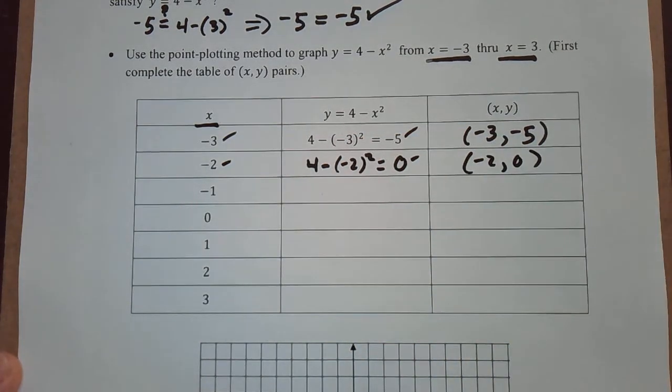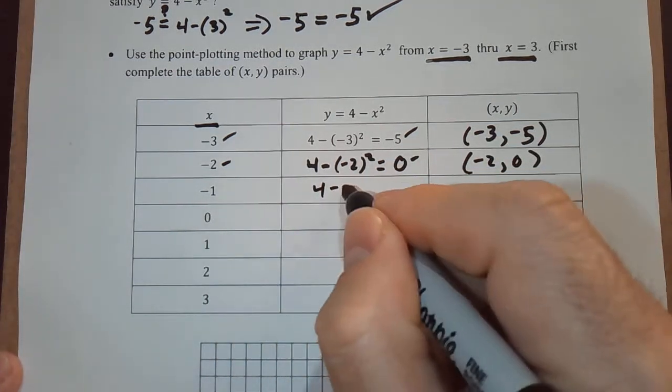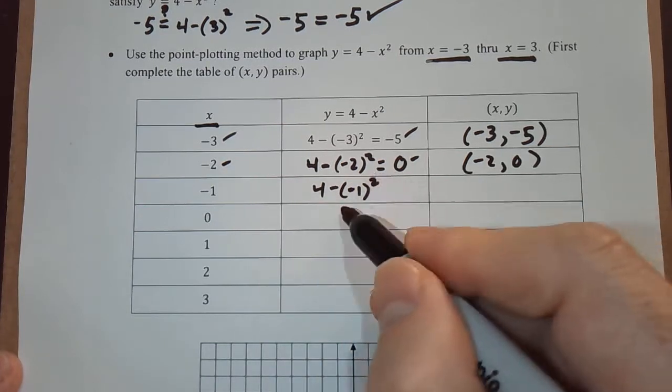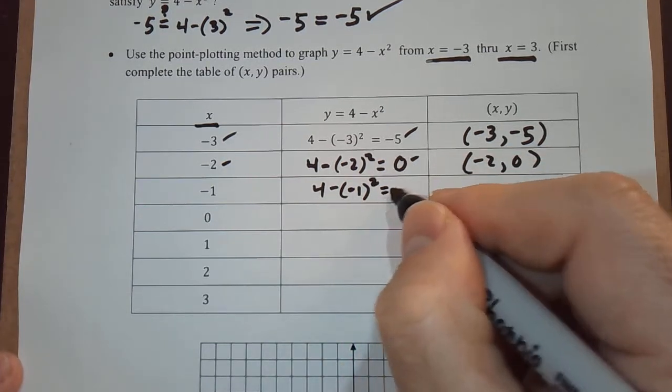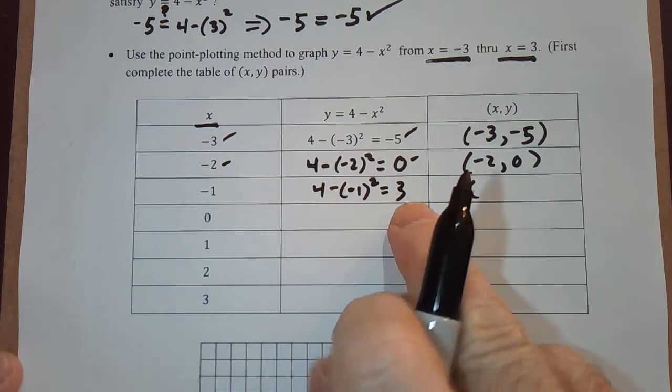That's our second pair. Negative 1 for x, 4 minus negative 1 squared. 4 minus 1 because negative 1 squared is 1. 4 minus 1 is 3, so negative 1 comma 3.